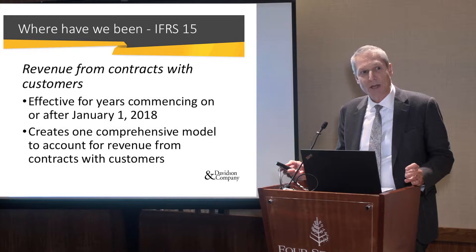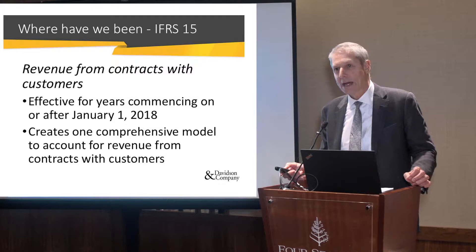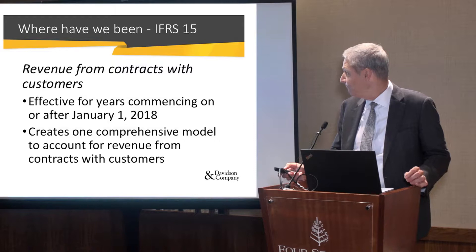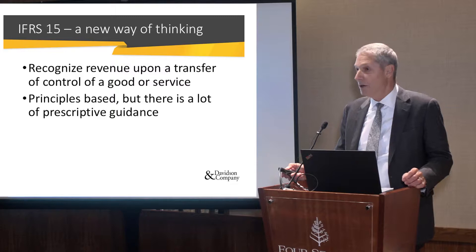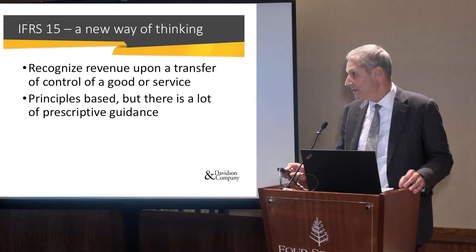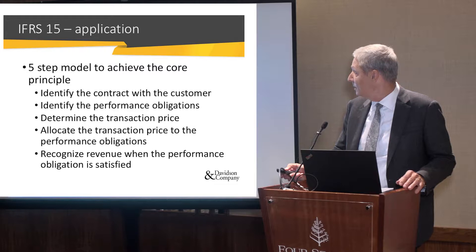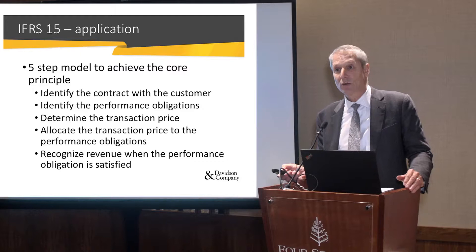Firstly, where have we been? There's IFRS 9 Financial Instruments and IFRS 15, which is revenues. On revenues — it's specific to contracts; you need a contract to meet the revenue recognition policy. It's effective as of last year and it's really one model for all types of revenue. You recognize revenue upon the transfer of control of a good or a service. It's very principles-based with lots of guidance. The five-step model requires a contract, performance obligations, determining the transaction price, allocating the price to obligations, and recognizing revenue as you complete those obligations.